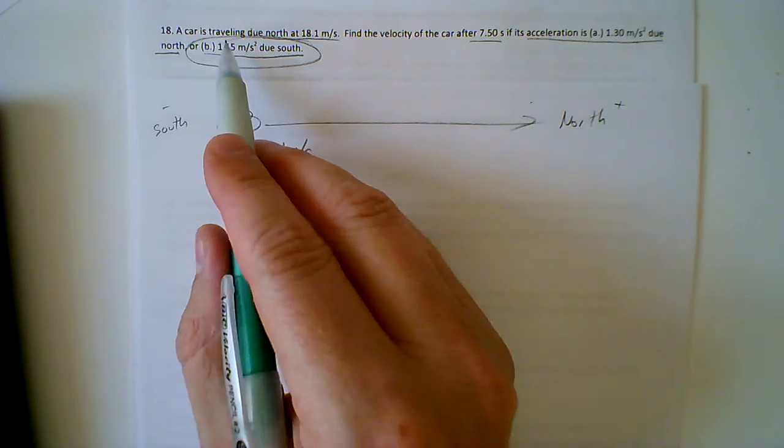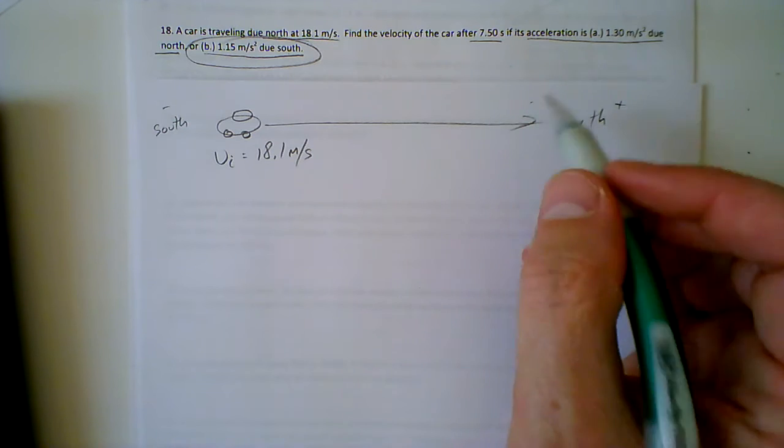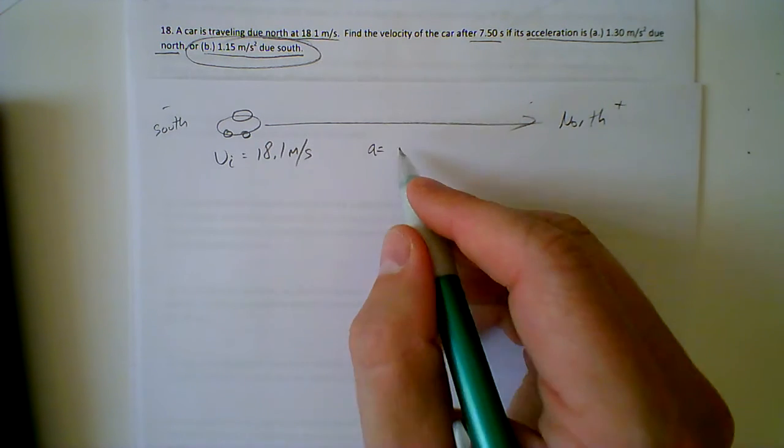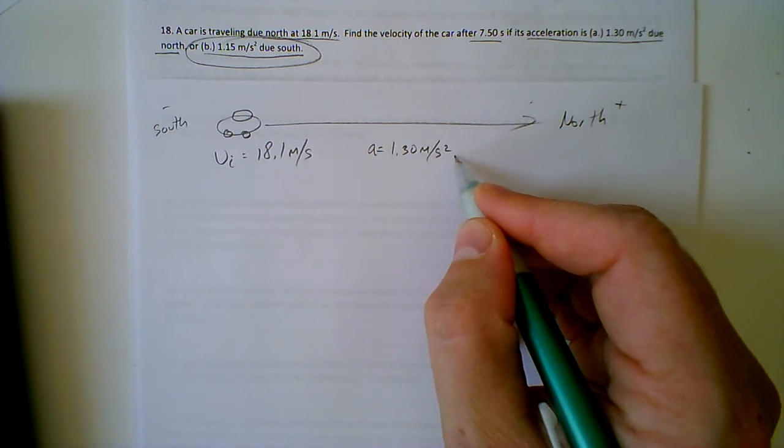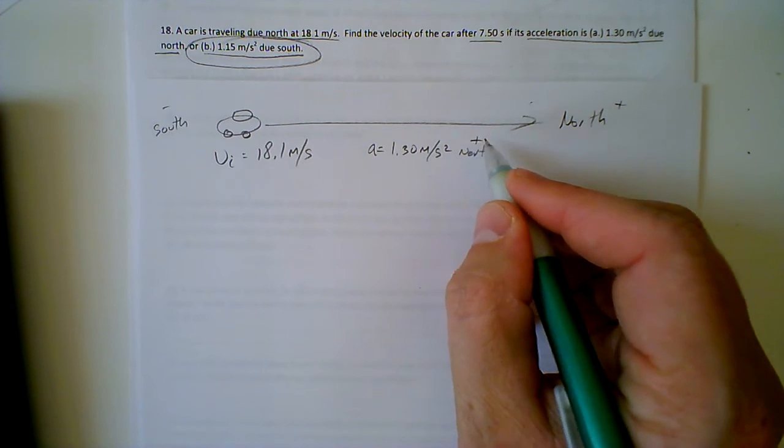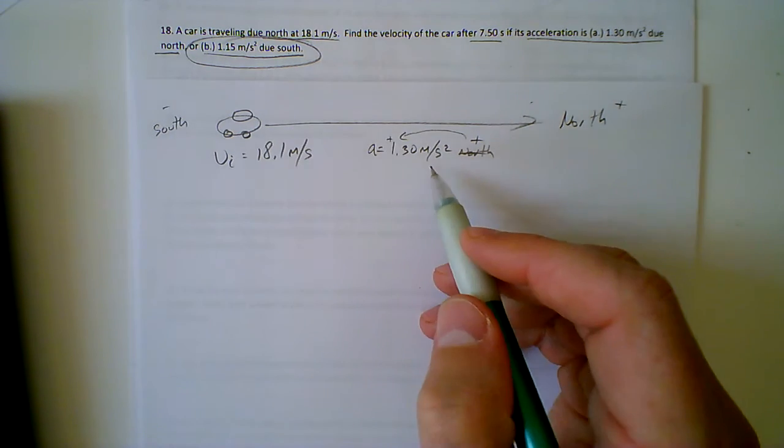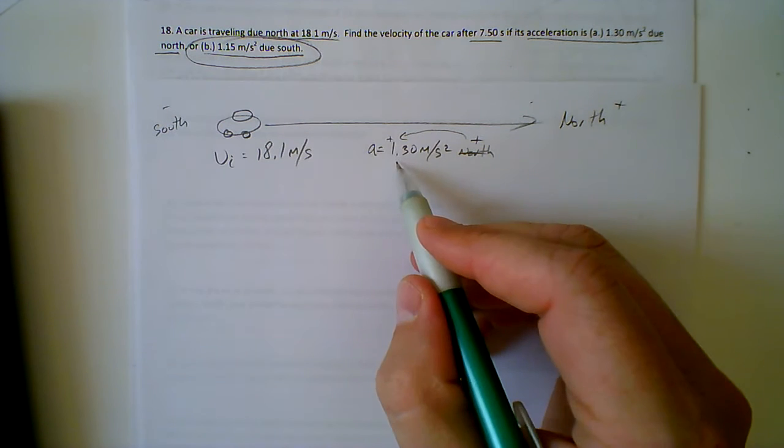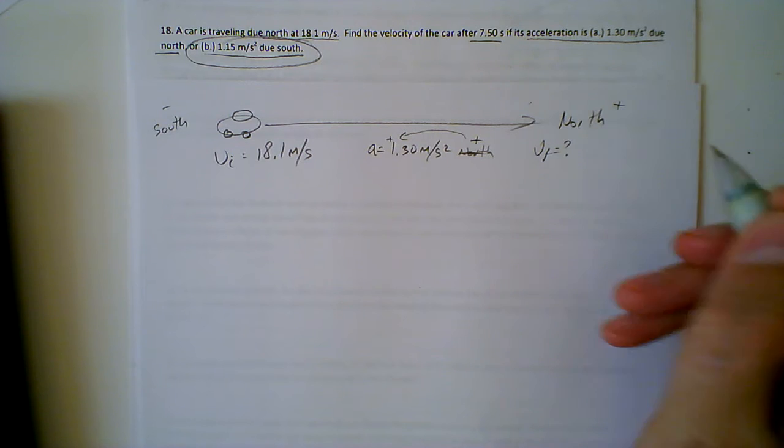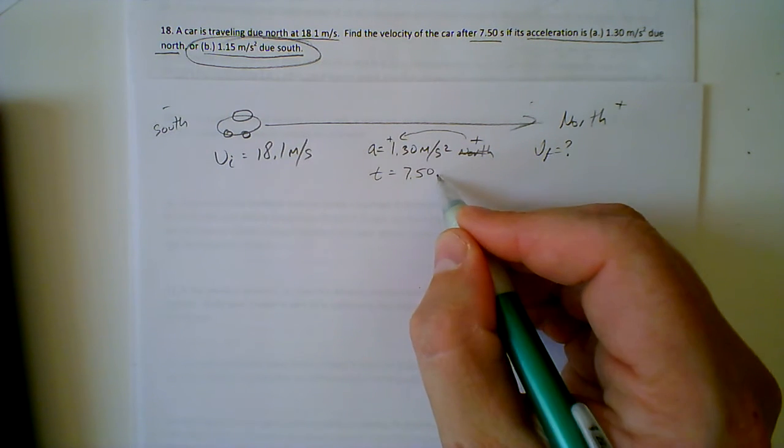So we're going to be traveling north at 18.1 meters per second, and we're going to be accelerating during this time at 1.30 meters per second squared north. We're going to turn that into a mathematical expression. There's going to be a positive there, so 1.30 meters per second squared, and we're trying to find what the final velocity is going to be after a time of 7.50 seconds.